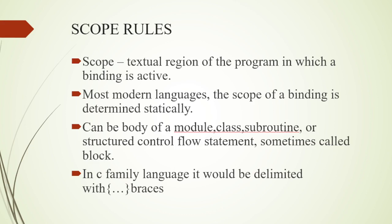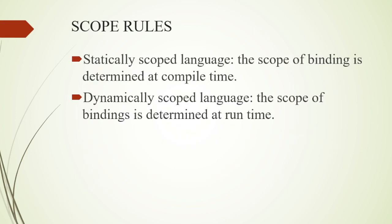Sometimes it is called a block. In C language, it would be within curly braces — a set of statements. We call that a block of statements. Scope tells us in which portion the binding will be activated.